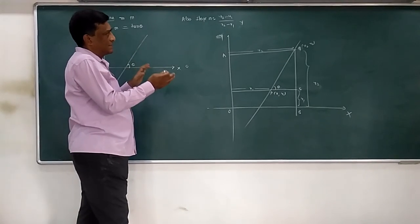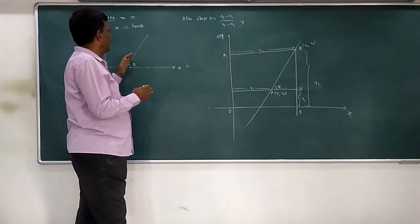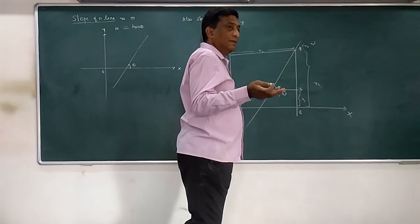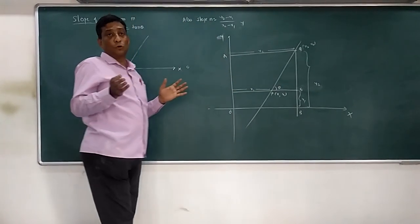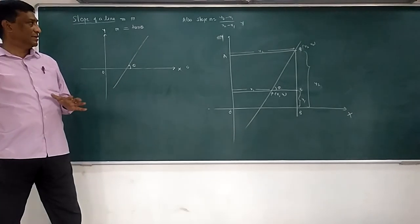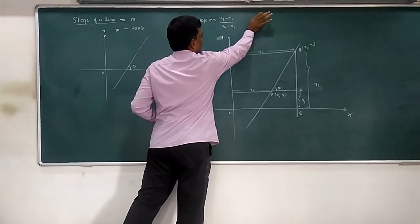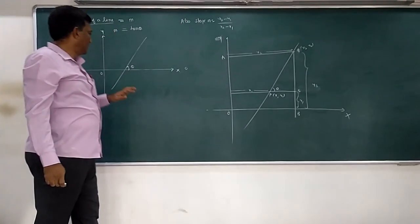Even though slopes are the same, there are two formulas. One is tan theta, second is y2 minus y1 upon x2 minus x1. How come slopes are the same and formulas are different? Actually they look different, but they are not different, they are all the same. I will show you how.